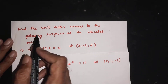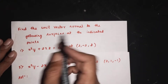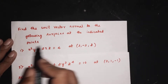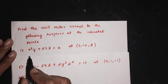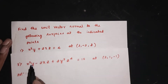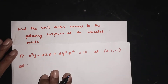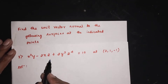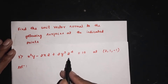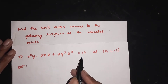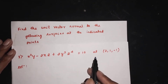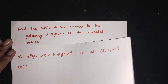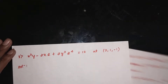The next question: find the unit vector normal to the following surface at the indicated point. x squared y minus 2xz plus 2yz, y squared z to the power 4 is equal to 10, at the point (2, 1, -1). Find this unit normal vector.